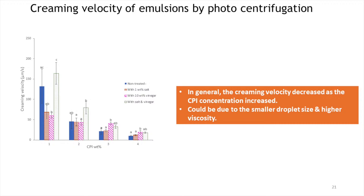The creaming velocity of emulsions with different treatments was measured using a photocentrifugation method at 3000 rpm, reported in micrometers per second. In general, creaming velocity decreased as canola protein concentration increased, possibly due to smaller droplet size and higher viscosity. For 1–2% canola protein emulsions, the creaming velocity of salt and vinegar-treated emulsions was higher than salt-only or vinegar-only emulsions. For 3–4% emulsions, the vinegar-treated and both salt and vinegar-treated emulsions had higher creaming velocity than the non-treated and salt-treated emulsions.